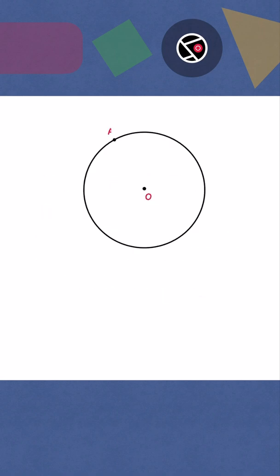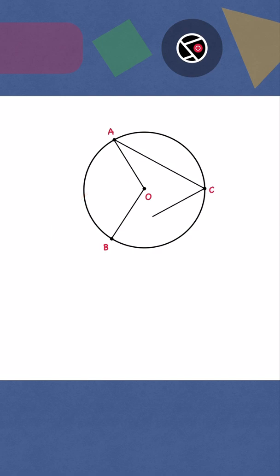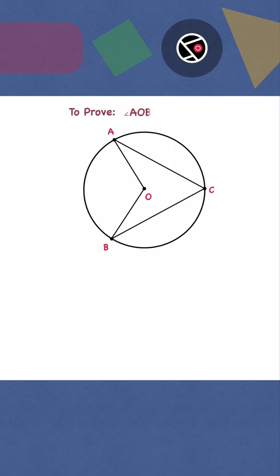We have a circle with centre O. AOB is the central angle. ACB is the inscribed angle. We have to prove that angle AOB is twice angle ACB.